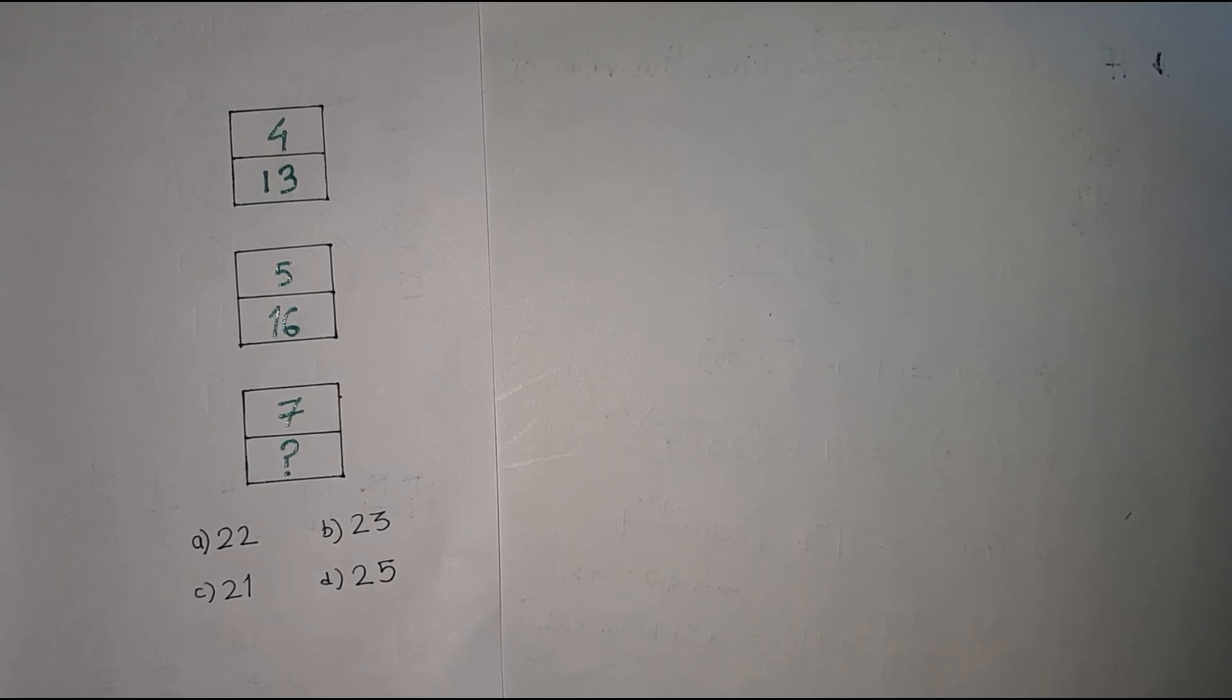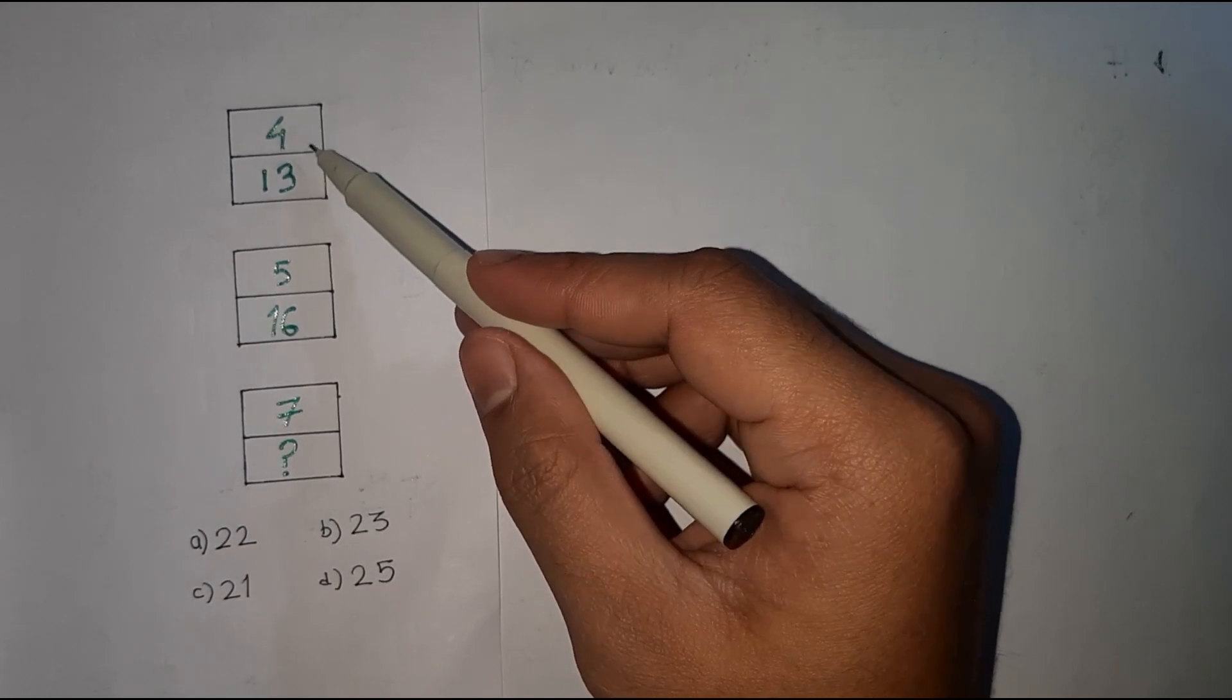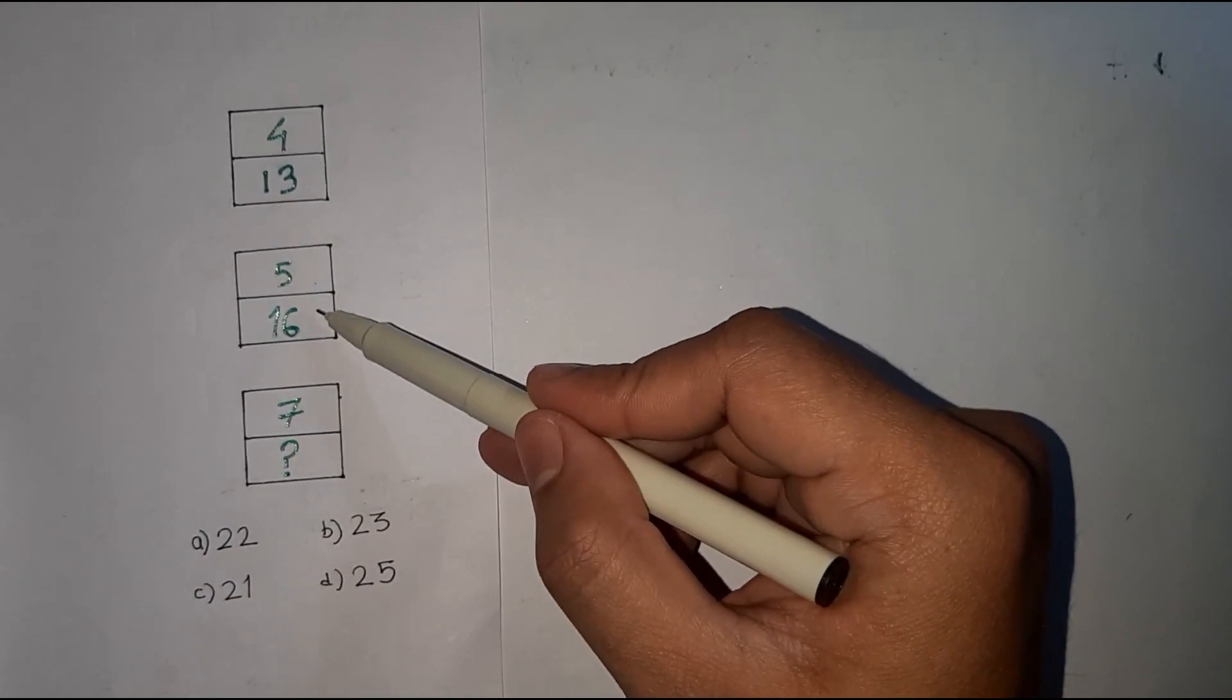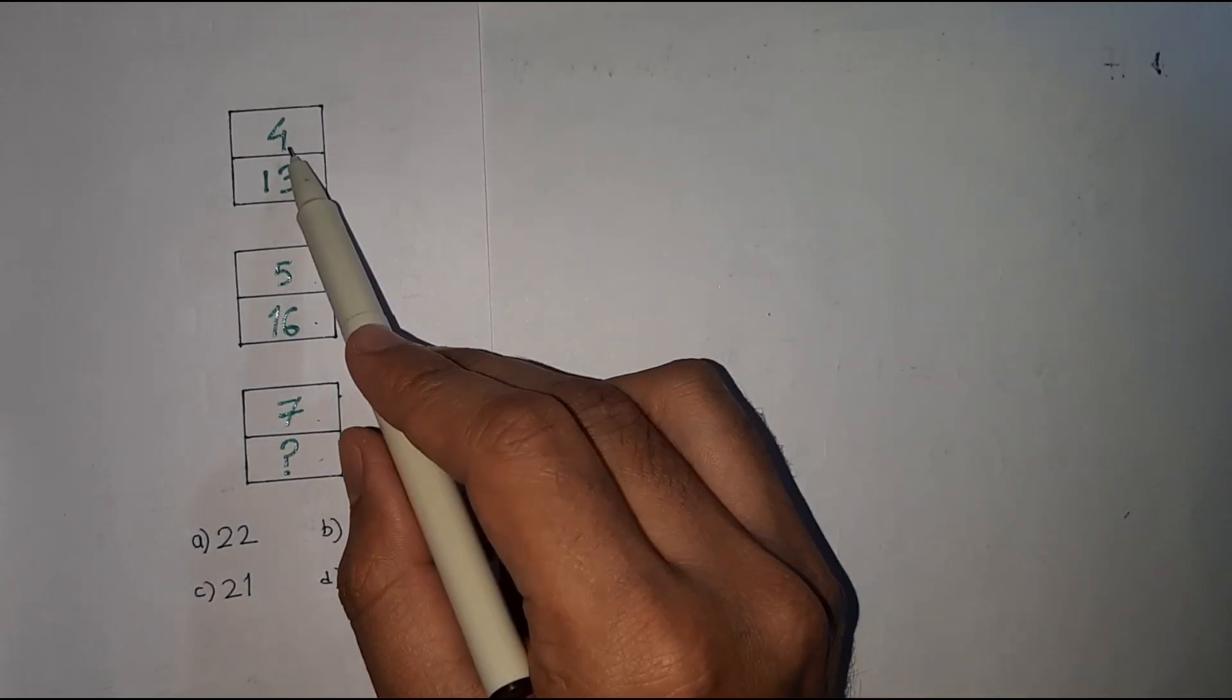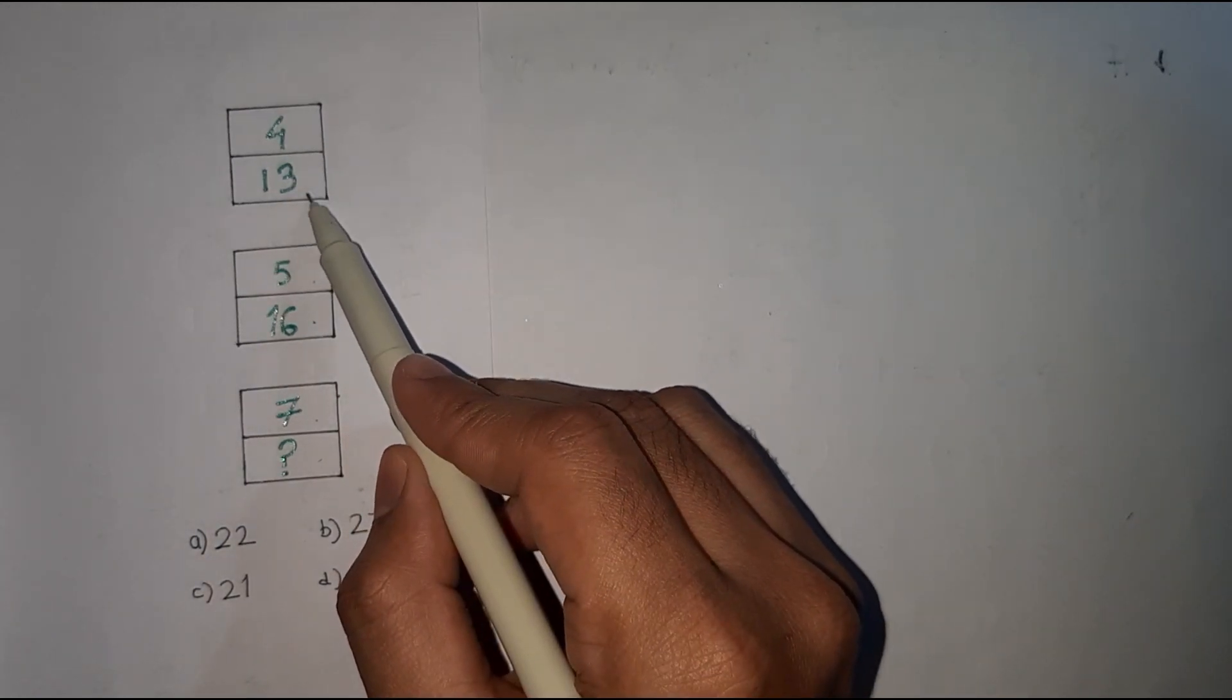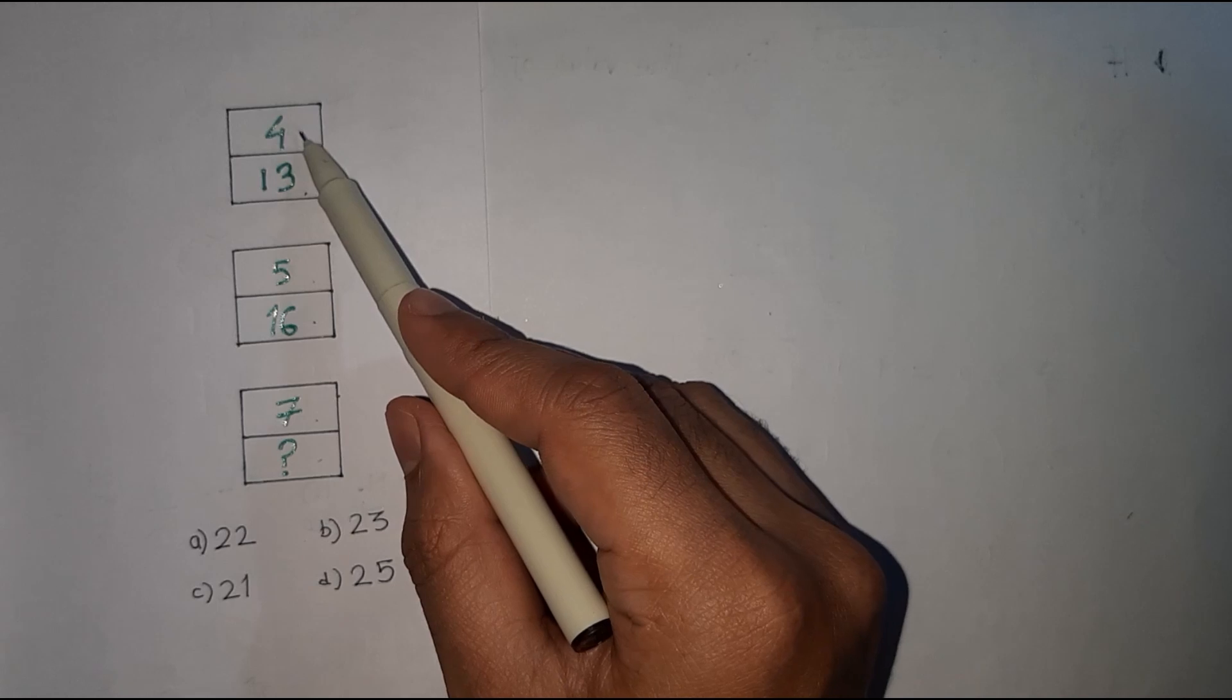Hey guys, welcome to my channel. Let's solve the reasoning problem given in this box: 4 and 13, 5 and 16, 7 and we need to find out this value. So here is 4 and here is 13. If we multiply 4